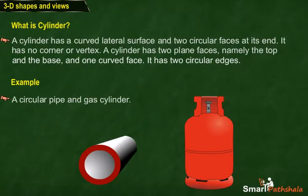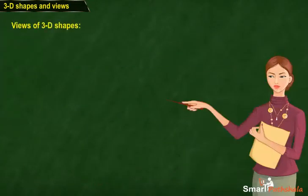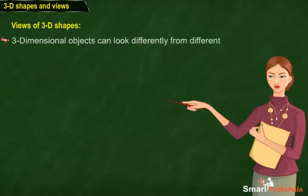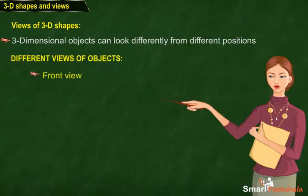Students, let's learn about the views of 3D shapes. Three dimensional objects can look differently from different positions, so they can be drawn from different perspectives. Students, now let's learn about different views of objects: front view, top view, side view.